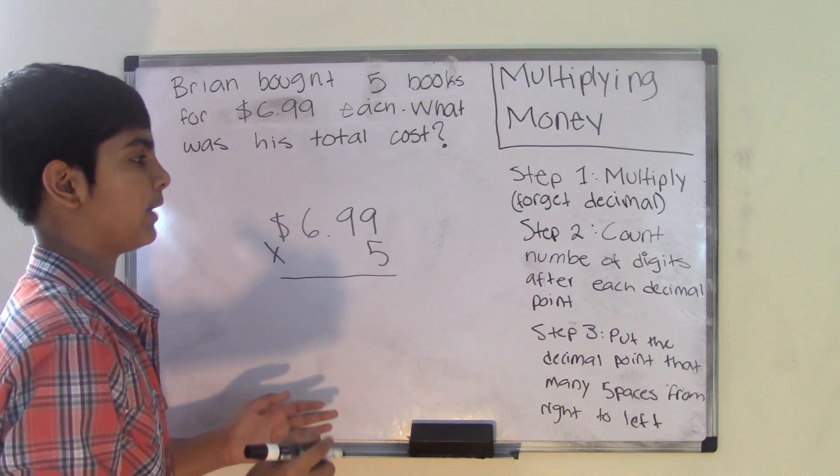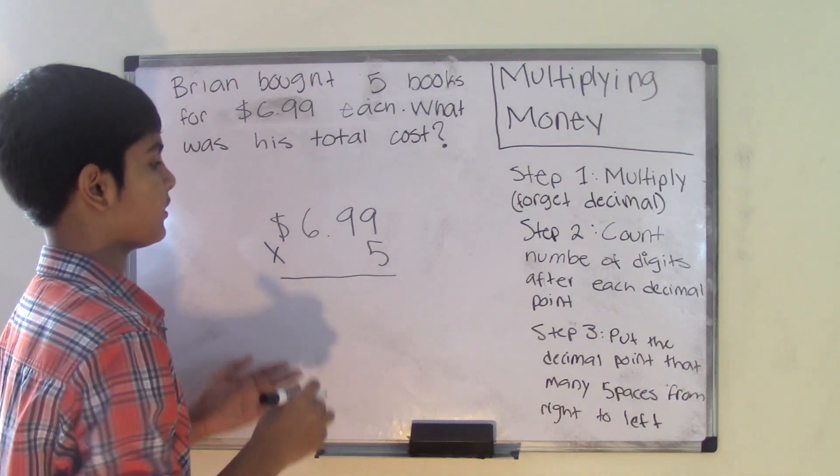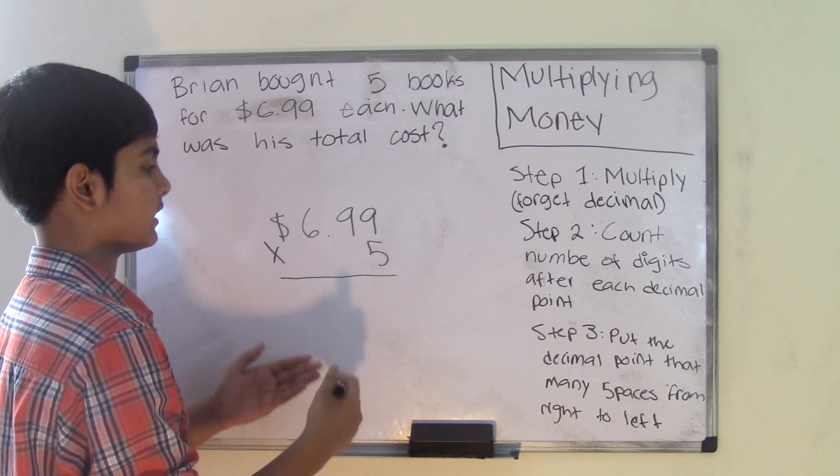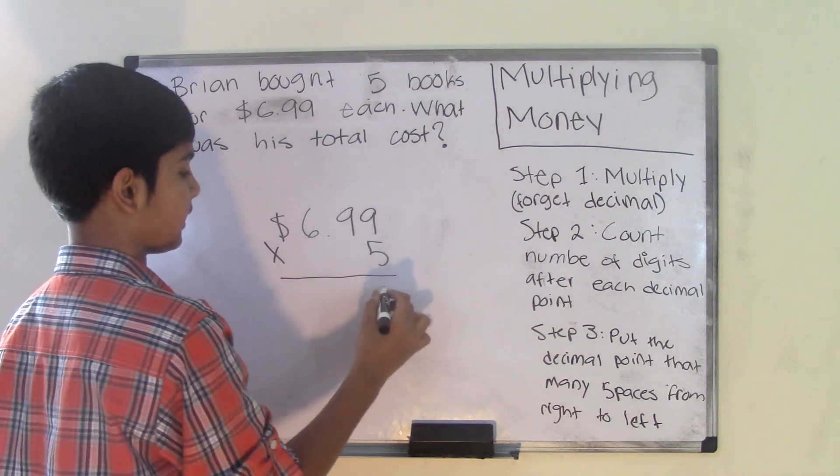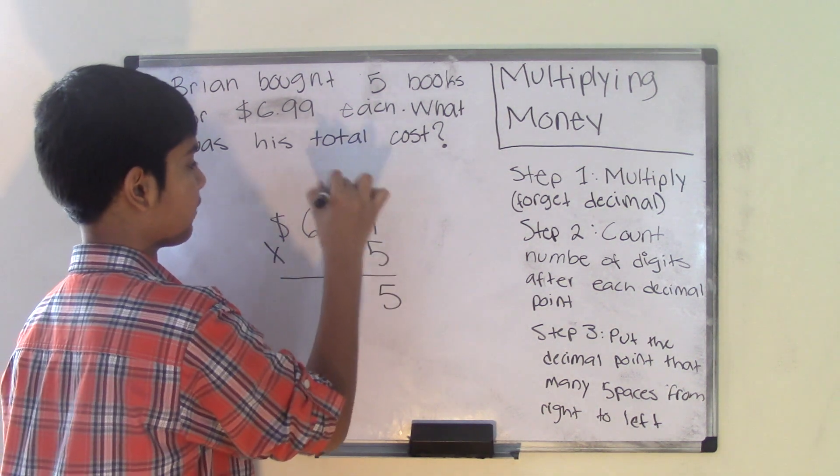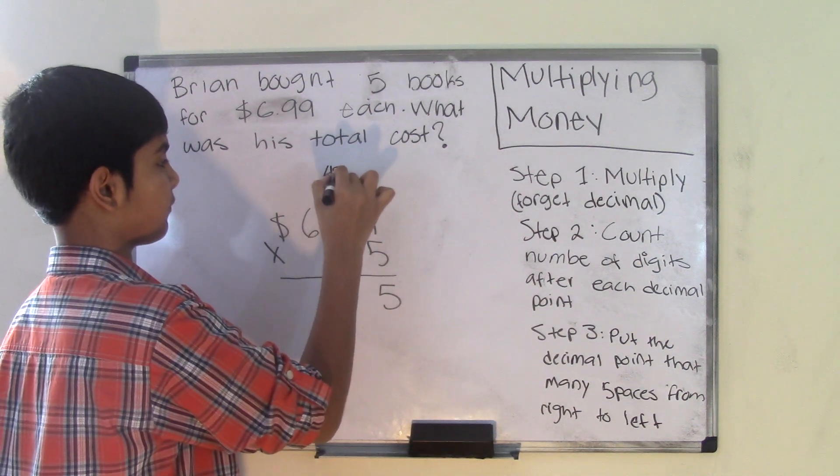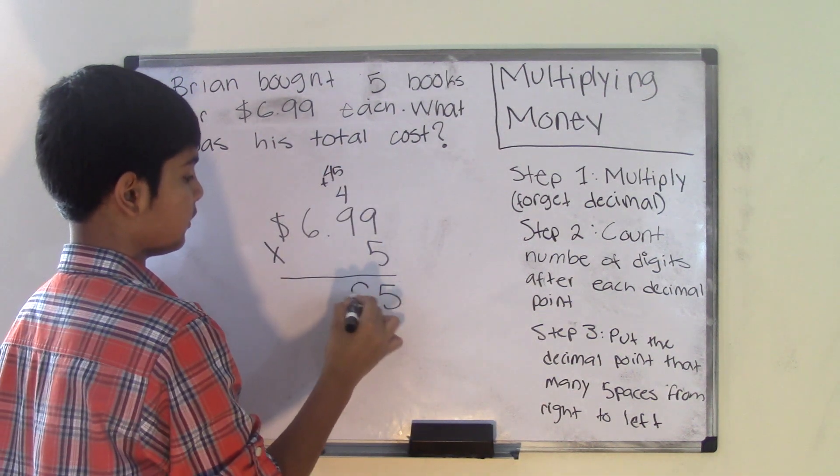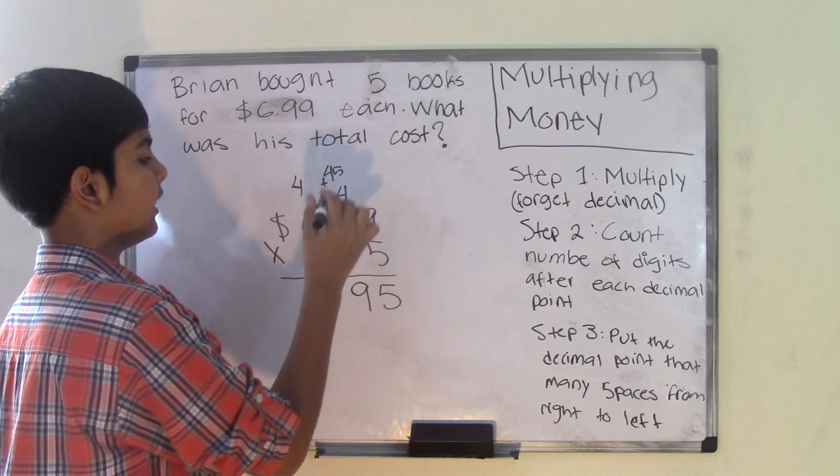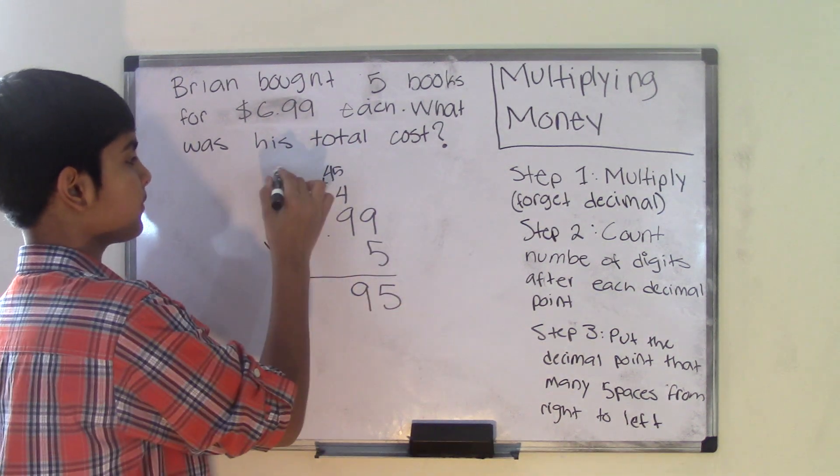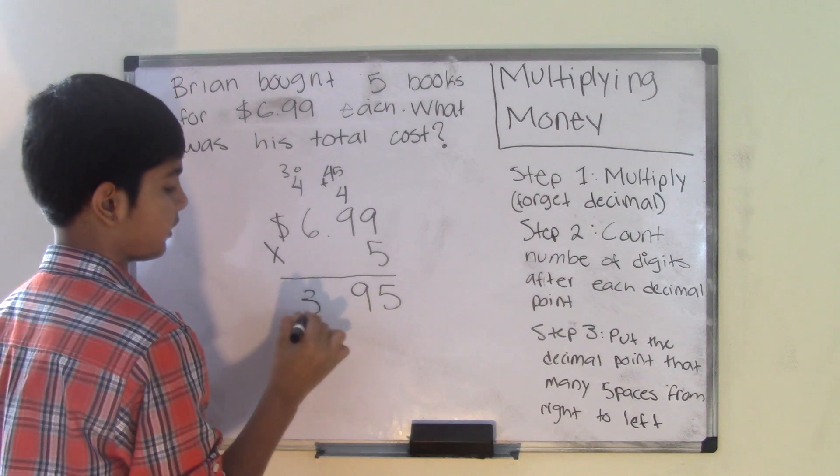Step number one is multiply and forget the decimal point. Right now I'm going to forget the decimal point and simply multiply. So five times nine is 45, we're going to carry the four over. Five times nine is 45 plus that four equals 49, but I'm going to bring that four over again, and then five times six is 30 plus that four gives us 34.